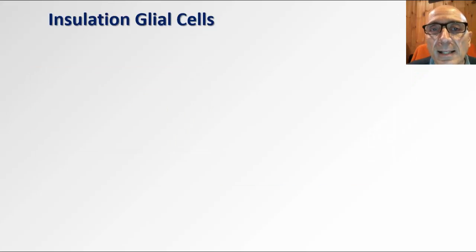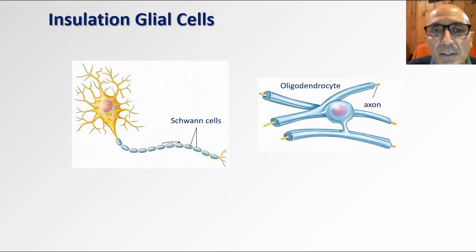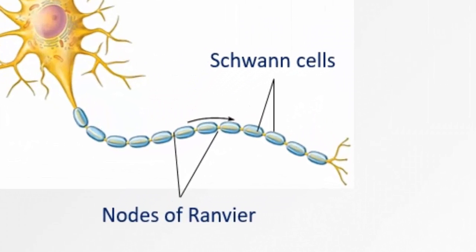Other glial cells act as electric insulators of axons. Two main types of glial cells are involved in this function: Schwann cells and oligodendrocytes. Schwann cells insulate axons of neurons found in the peripheral nervous system. They do so by wrapping their plasma membranes around axons. The result of this process is covering of the axon along most of its surface while leaving axonal membranes between Schwann cells exposed. These exposed regions are known as the nodes of Ranvier.